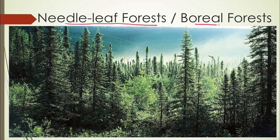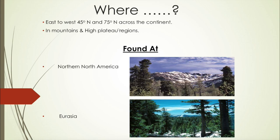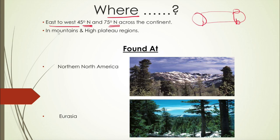The next forest type is needle leaf forest, also called boreal forest. In America they are called boreal forest. As the name suggests, the leaves look like needles or spikes. These forests are found from east to west across the earth, mainly between 45 degrees north and 75 degrees north latitude across continents.